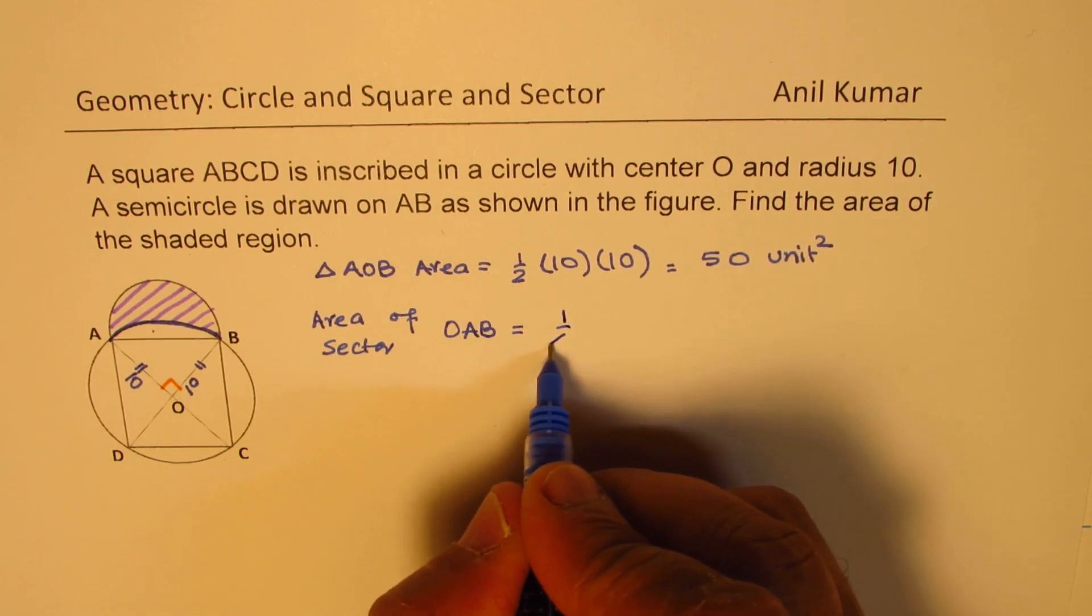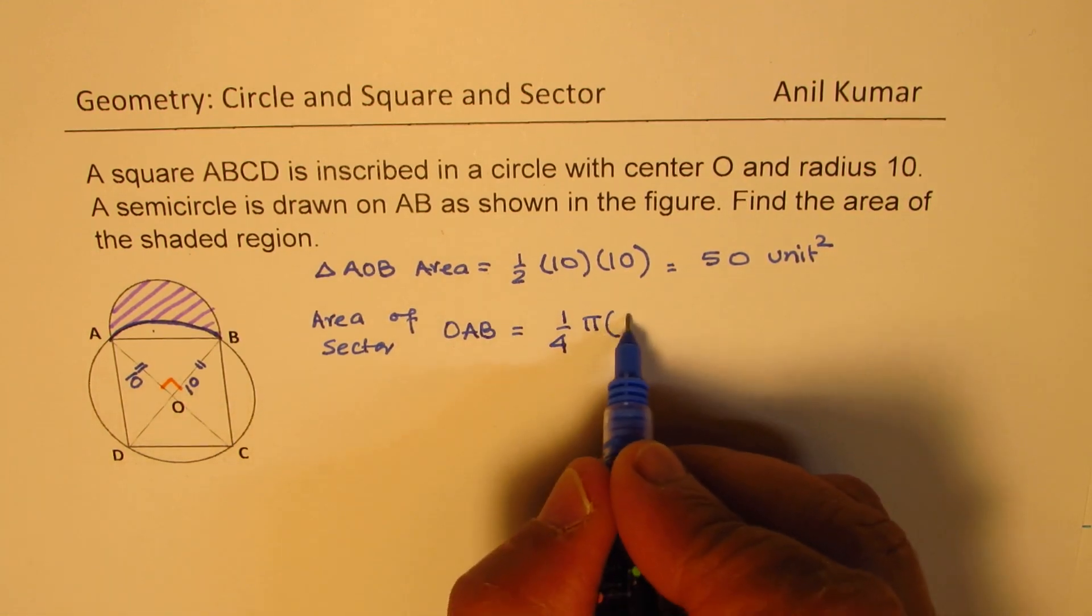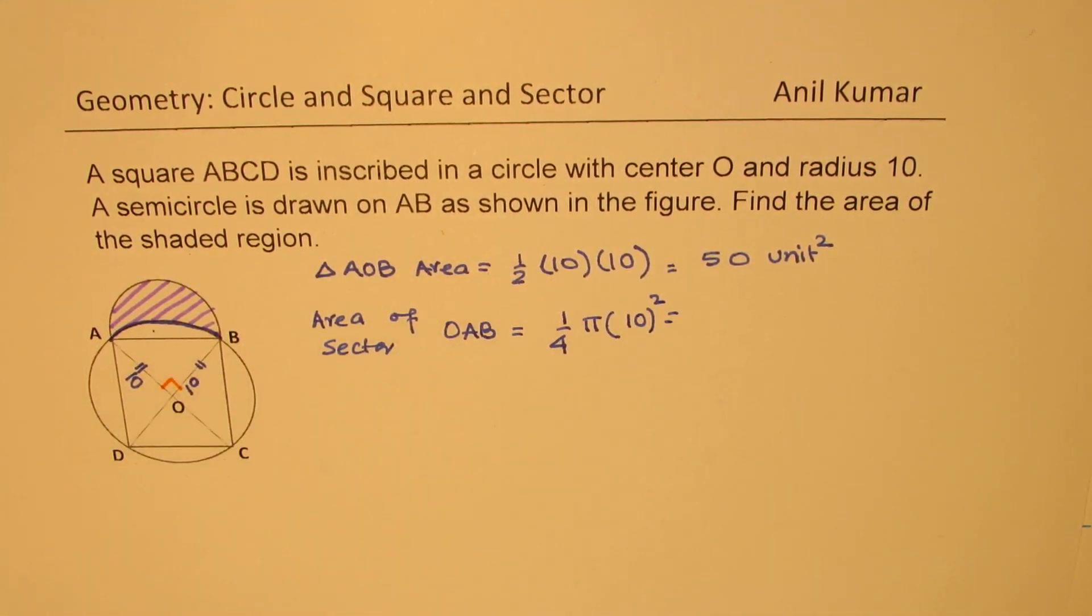This is one-fourth of the circle, and therefore, it will be one-fourth of πr², and radius is 10, πr².